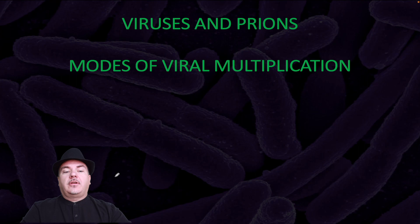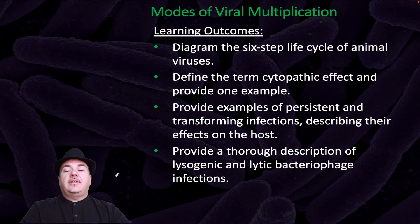By the end of this video, you should be able to diagram the six-step life cycle of animal viruses, define the terms cytopathic effect and provide one example, provide examples of persistent and transforming infections describing their effects on the host, and provide a thorough description of the lysogenic and lytic bacteriophage infections.